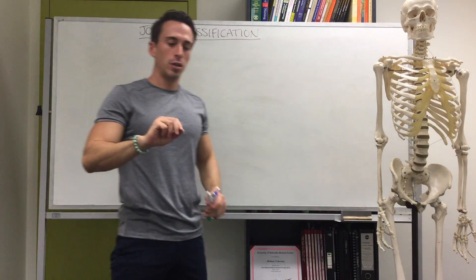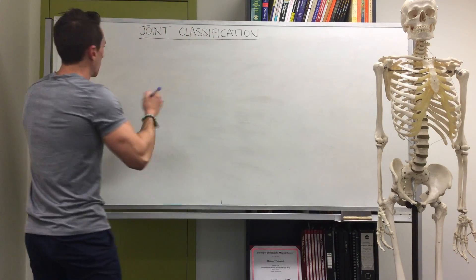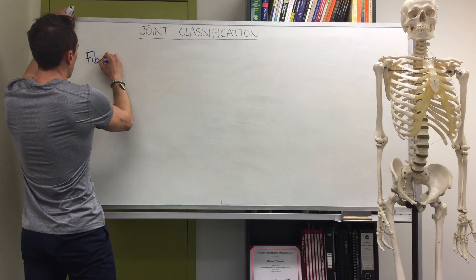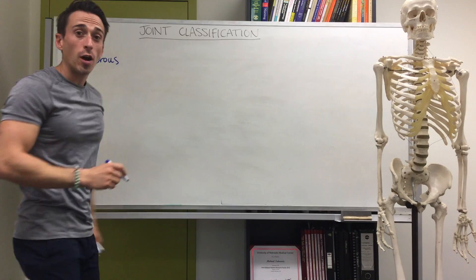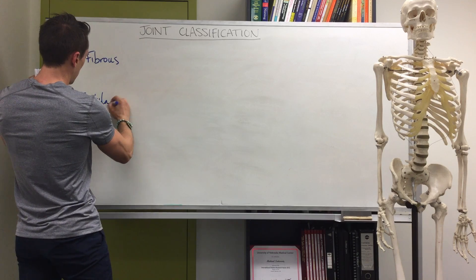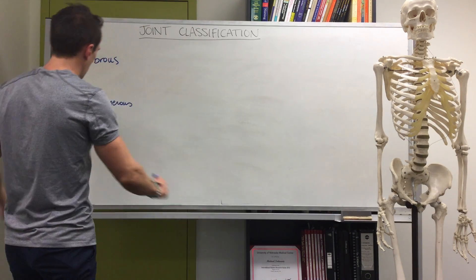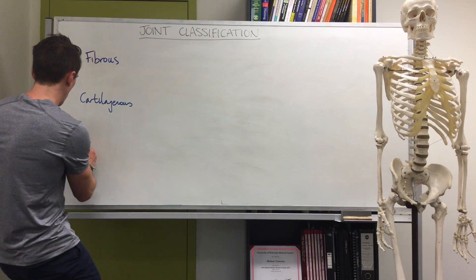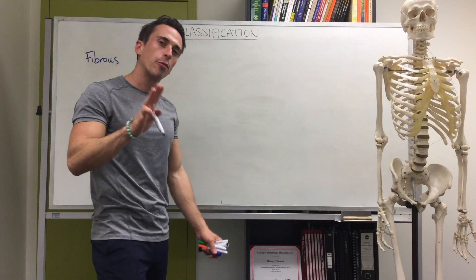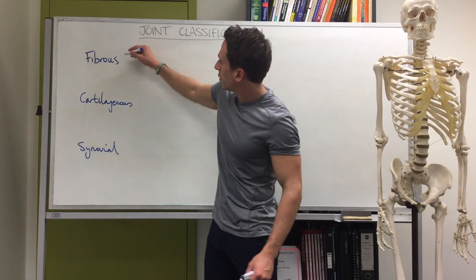There are three major types of joints we can draw up. The first type is a fibrous joint. The second type is a cartilaginous joint. And the last type is a synovial joint. So these are the three major types of joints: fibrous, cartilaginous, and synovial.